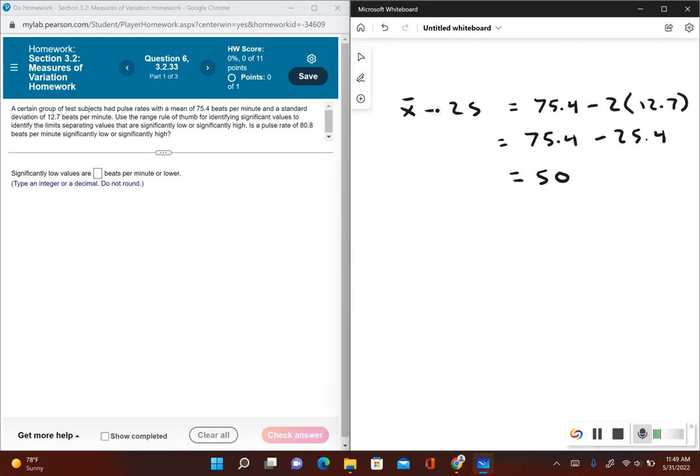Significantly high values would be the mean plus 2 standard deviations. So we still have the same mean, which is 75.4, and now I'm going to add 2 times the standard deviation.